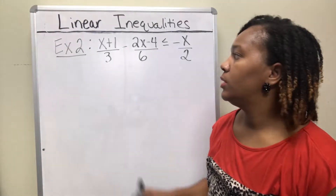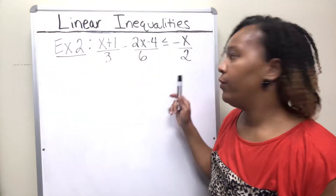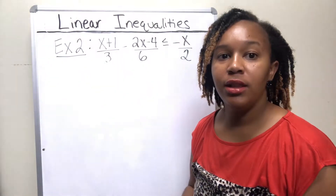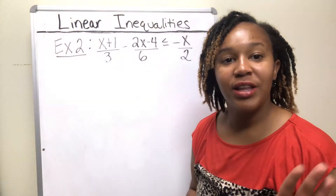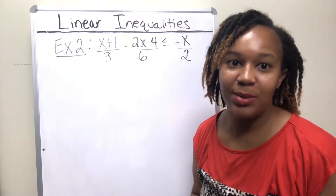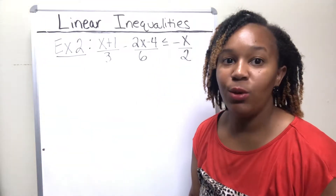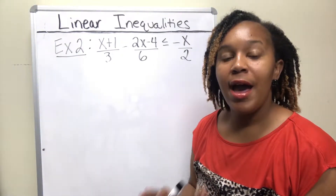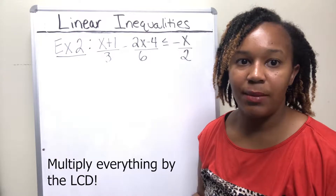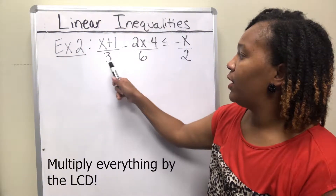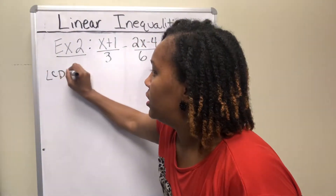For example 2, we want to solve: x plus 1 over 3, minus 2x minus 4 over 6, is less than or equal to negative x over 2. This is a linear inequality with fractions. Fractions are like those family members we love dearly but can't stand to be around — we try to get rid of them. To eliminate fractions, multiply everything by the least common denominator. The LCD for 3, 6, and 2 is 6.